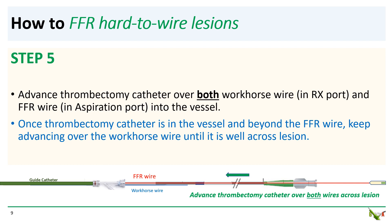The tip of the FFR wire is just in the proximal part of the vessel. So once the thrombectomy catheter is advanced into the vessel, it will quickly go beyond the tip of the FFR wire, but will still ride on the workhorse wire. You keep advancing the thrombectomy catheter over the workhorse wire until it is well across the lesion into the distal part of the vessel.